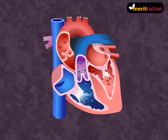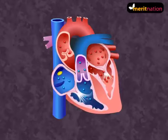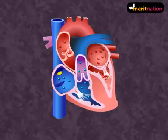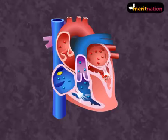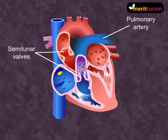As ventricular contraction increases, the ventricular pressure causes the closure of the AV valves. This continuous contraction causes a further increase in ventricular pressure, which opens the semilunar valves and the blood flows into the pulmonary artery and the aorta.